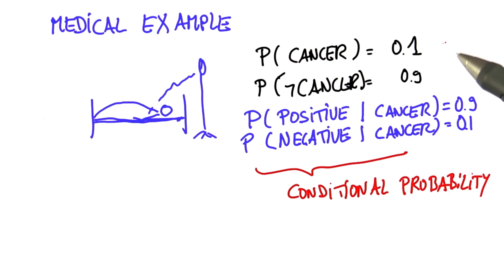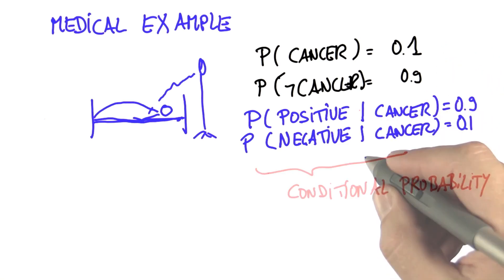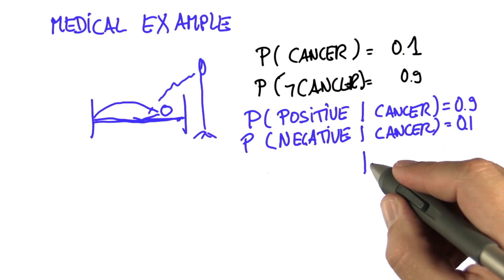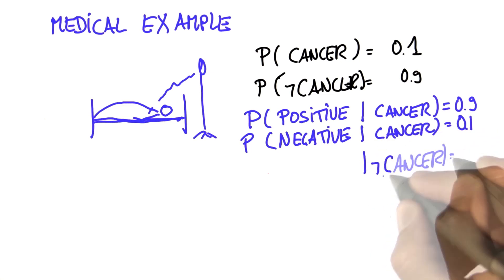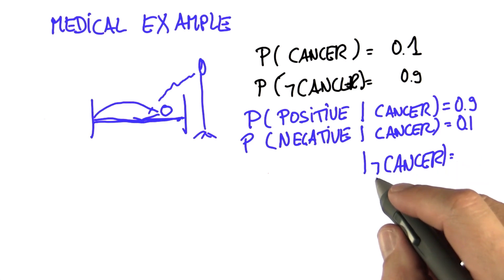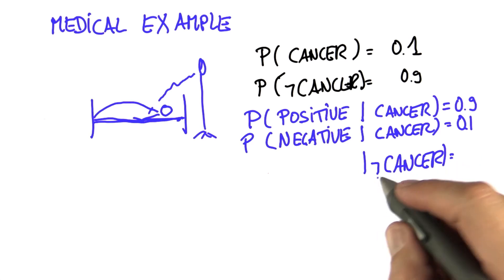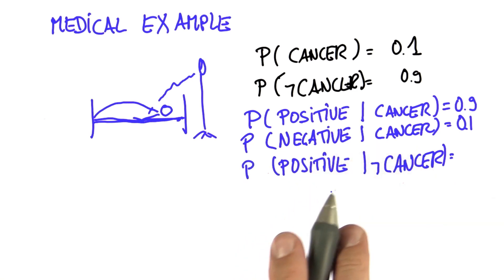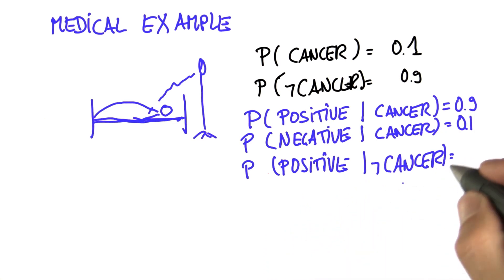Now, it turns out I haven't fully specified the test. The same test might also be applied to a situation where the person does not have cancer. So this little thing over here is my shortcut of not having cancer. And now, let me say the probability of the test giving me a positive result, a false positive result, when there's no cancer, is 0.2.